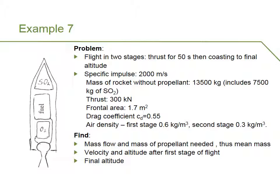Air density is given as a constant for each stage of flight. In reality, air density decreases with altitude, but to simplify the calculation, we take it as 0.6 kilograms per cubic metre during the first stage and 0.3 kilograms per cubic metre during the second stage. We need to find the mass flow and mass of propellant needed, the mean mass of the rocket, the velocity and altitude reached after the first stage, and thus the final altitude reached.